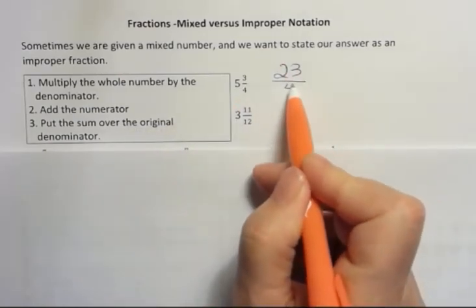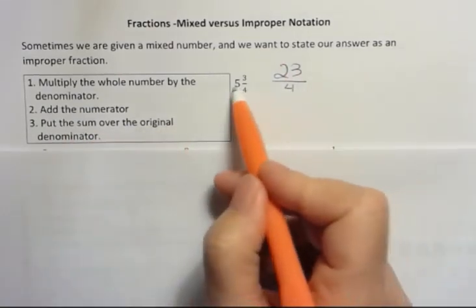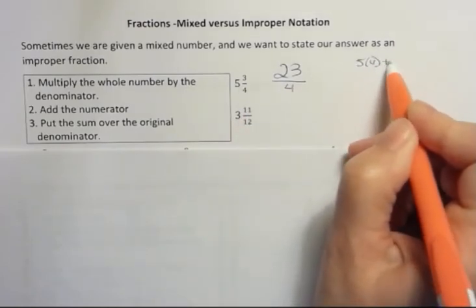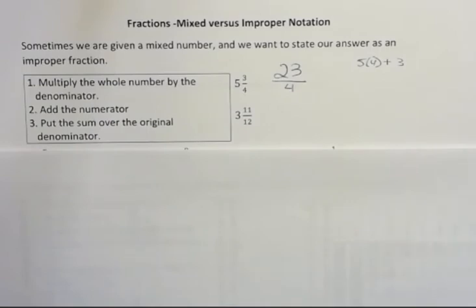So we have 4. Why do I say the sum? Because we have 5 times 4 then plus 3. And the sum is an answer to an addition problem. So after you add those two things together, that's what goes over the original denominator.